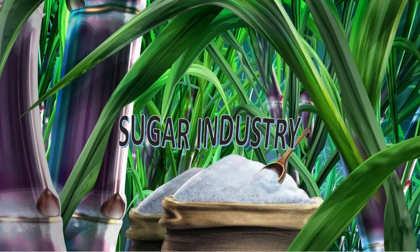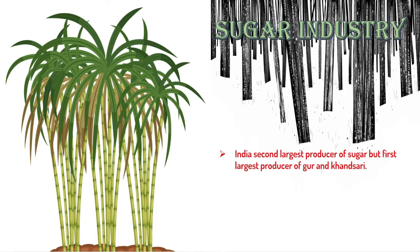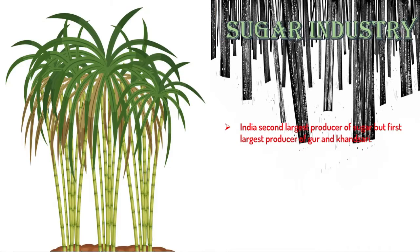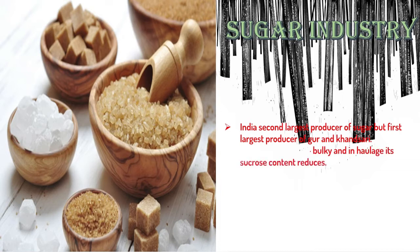India is the second largest producer of sugar — Brazil ranks first, accounting for 50 percent of sugarcane production, while India accounts for 25 percent. However, in terms of production of gur and khansari, India ranks first.